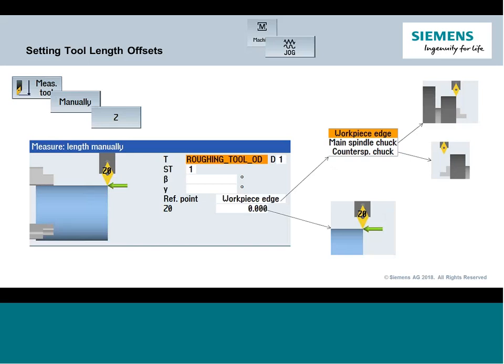I can also do the Z offset using the beta and gamma fields, touching off to a workpiece using the reference point workpiece option. We also have the ability to touch off to the main spindle chuck face or the counter chuck face — physically bringing the tool to touch the chuck body face, not the work holding face. When you choose that option, it automatically does the calculations. If you have presetters, everything gets handled in the back end. This is how to do it manually on the machine.